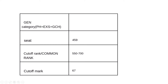We have the General category with 470 seats and 459 seats filled. We have seen the general category ranking between 11 categories, with a common rank of 555. We have seen the first selection admission, and the cutoff mark is 67.